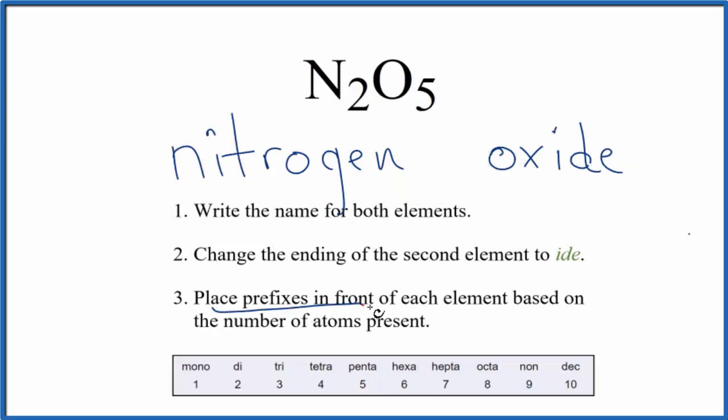Next, we're going to place prefixes in front of each element based on the number of atoms present. So we have two nitrogens. That means di. So we write di, nitrogen,